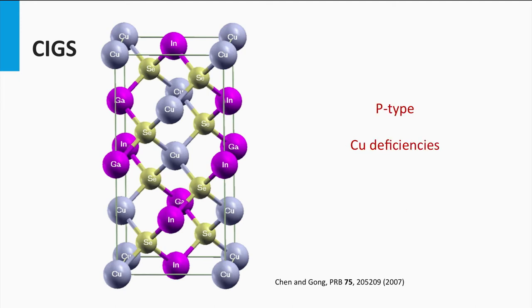The CIGS absorber layer is a p-doped layer. The doping is a result of intrinsic defects in the material, related to copper deficiencies. These vacancies actually act as an acceptor. This means electrons excited from the valence band can get easily trapped. As a result, the holes become the majority charge carrier density.